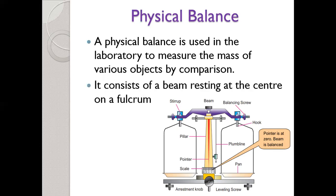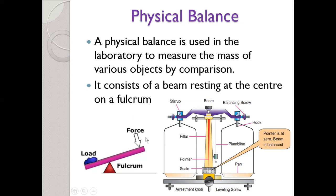Physical balance consists of a beam resting at the center on a fulcrum. We will first discuss the important term of the lever — a simple machine. A lever is basically a rod that can rotate around a pivot point, which we call the fulcrum. In the same way, the physical balance beam rotates around the fulcrum.